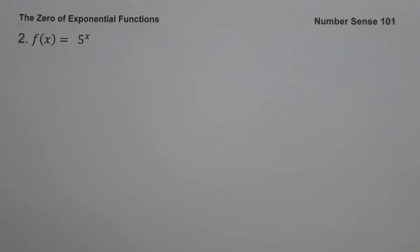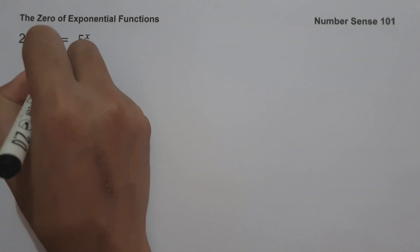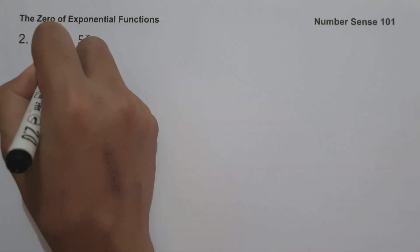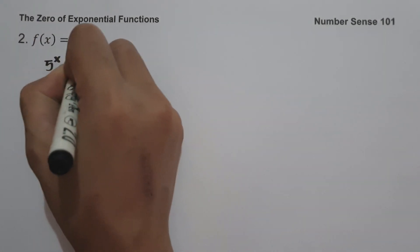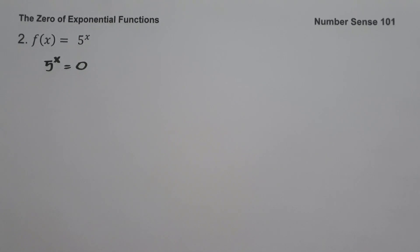On example number two, f(x) = 5 raised to x. To find the zero of the given function, let us equate the function equal to zero: 5 raised to x = 0. Then let us think of a number that will make the function equal to zero.